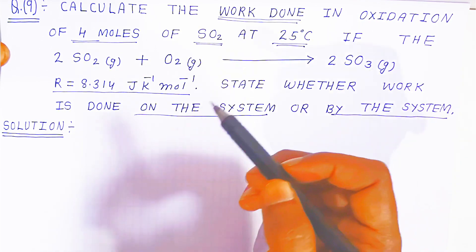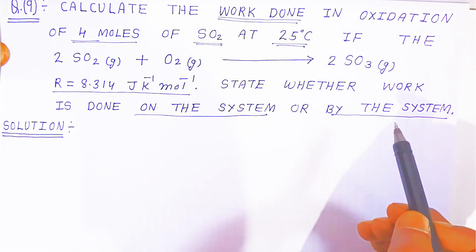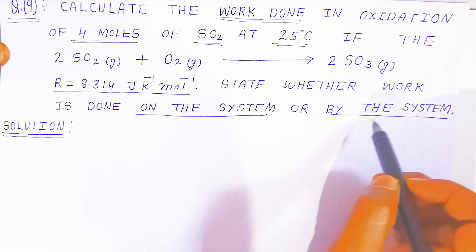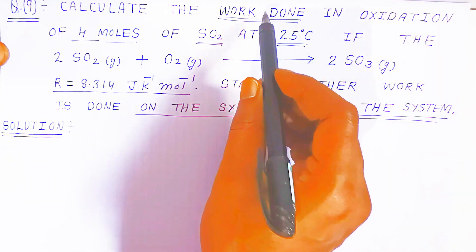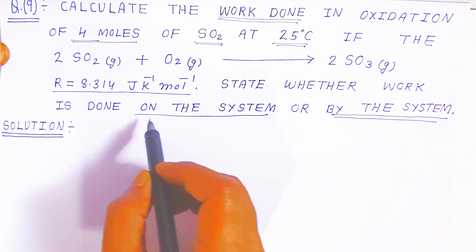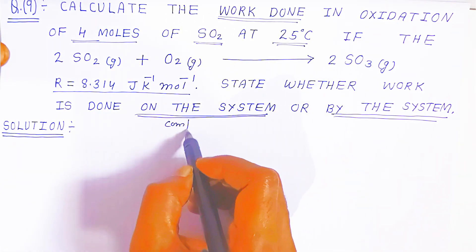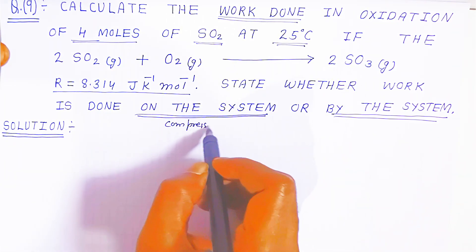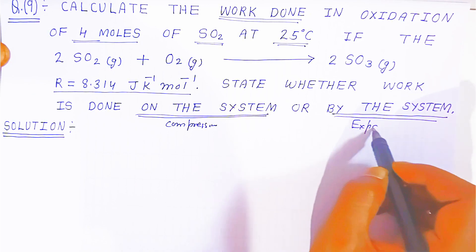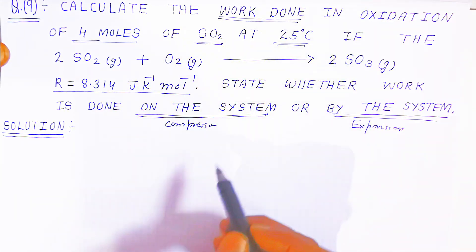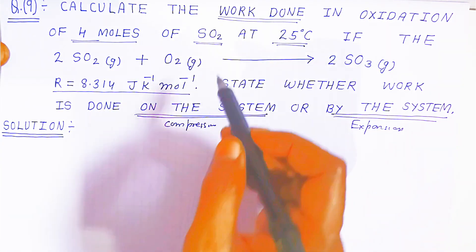Once you know the work done: if the answer is negative, it is work done by the system (expansion); if the answer is positive, it means compression is taking place — work is done on the system. Using the sign of work done, we can determine whether expansion or compression is occurring.